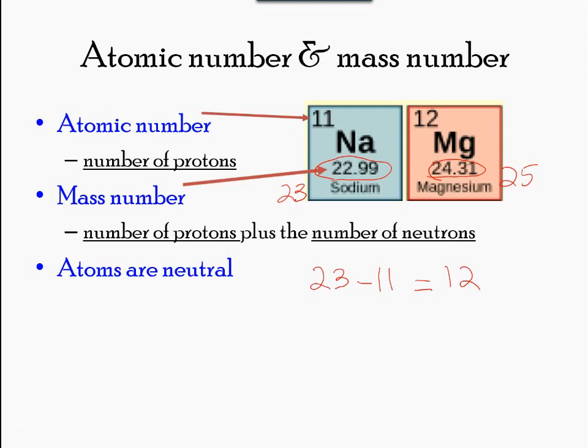Isotopes are different forms of the same element that have the same number of protons but a different number of neutrons.